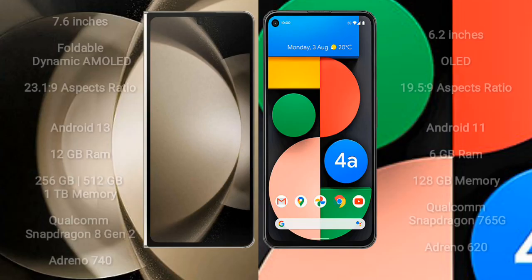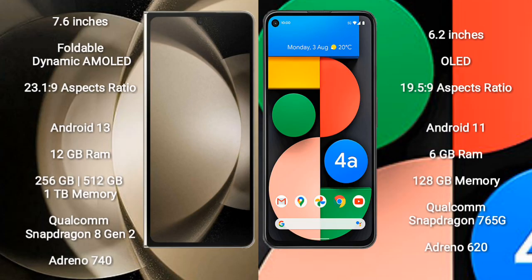The Samsung Galaxy Z Fold 5 comes with a 7.6-inch foldable dynamic AMOLED display and an aspect ratio of 23.1:9. The Google Pixel 4a comes with a 6.2-inch OLED display and an aspect ratio of 19.5:9.